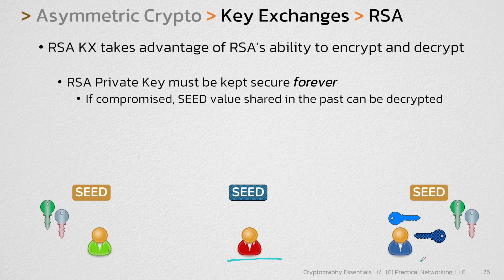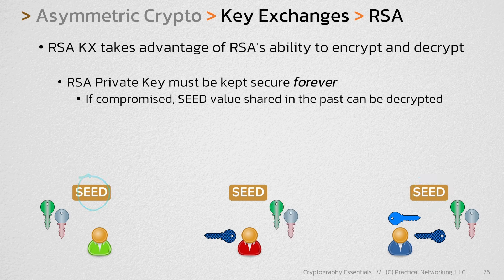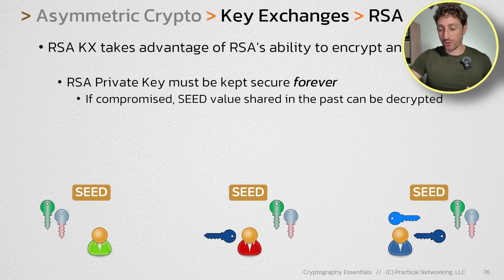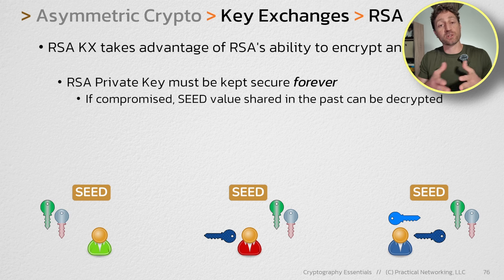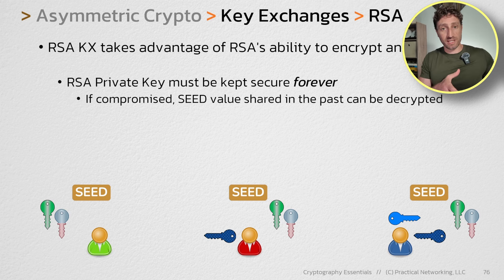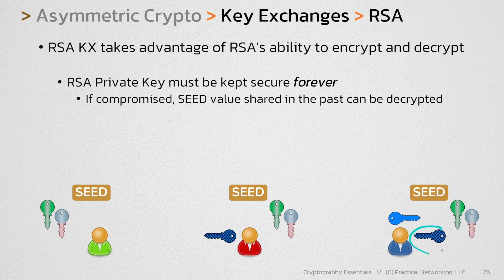If this red user gets a hold of this private key, they can take that private key and decrypt the seed value that was captured in the past, and use the same math that the blue and green user used to generate those same secret keys. And if this red user has the same secret keys that were used to protect the data sent in the past between the blue and green user, that red user now has visibility into everything that was sent in the past. That is why this private key has to be kept secure forever.